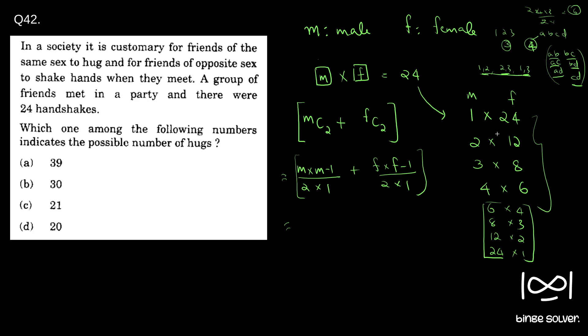So we'll check one by one. Let's put M equal to 1. So that becomes 1 into 0. So this term cancels. We will call this 1, 2, 3, 4 to avoid confusion. So in 1, 1 into 0 by 2 into 1 plus F is 24. So 24 into 23 by 2, which becomes 12 into 23 is a huge number. So 1 doesn't fit any of this answer. So that is not the answer.